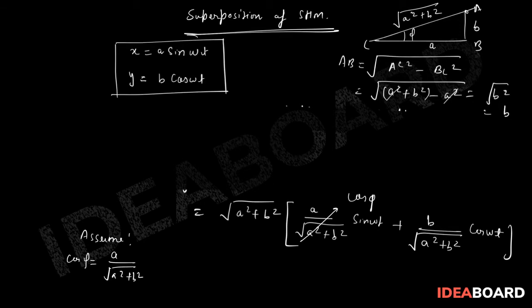The value of sin phi. If you see the sin phi from this triangle, sin phi will be B upon under root of A square plus B square. And interestingly, if you see the other term, this becomes sin phi only.